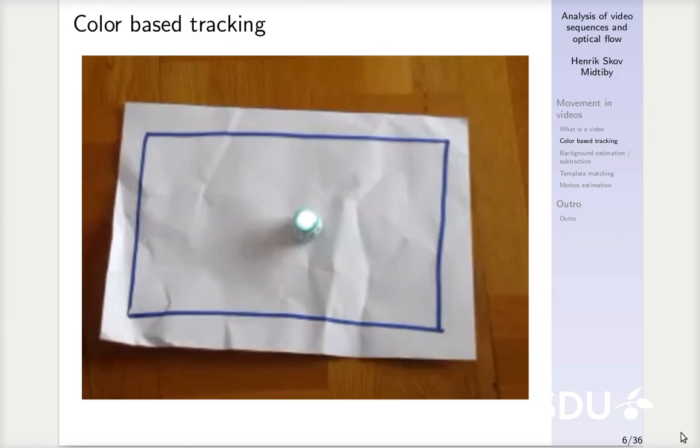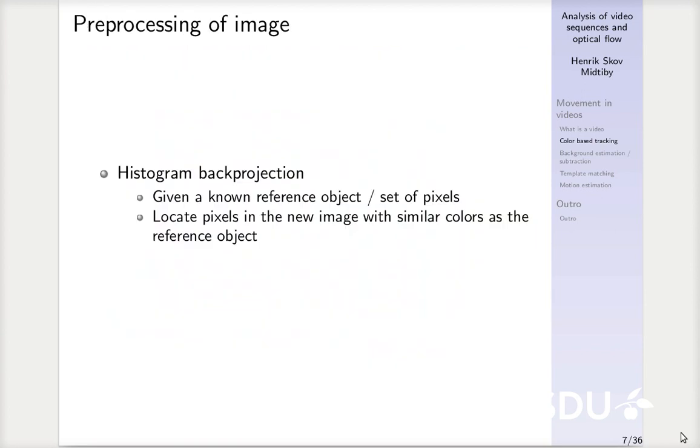That is the bright spot in the middle of the robot. And we can do that using histogram back projection, as you have worked with earlier. So, if we are given a set of pixels from that object and the object has a very distinct color, we can use histogram back projection to locate pixels in a new image that have similar colors as the reference object.